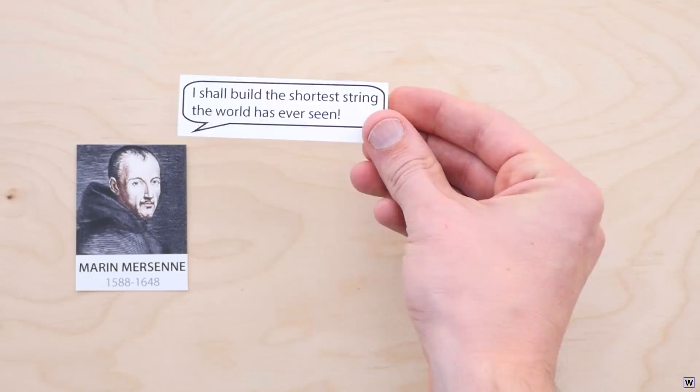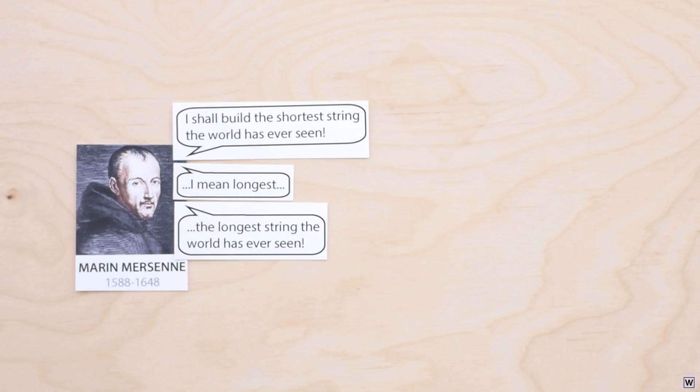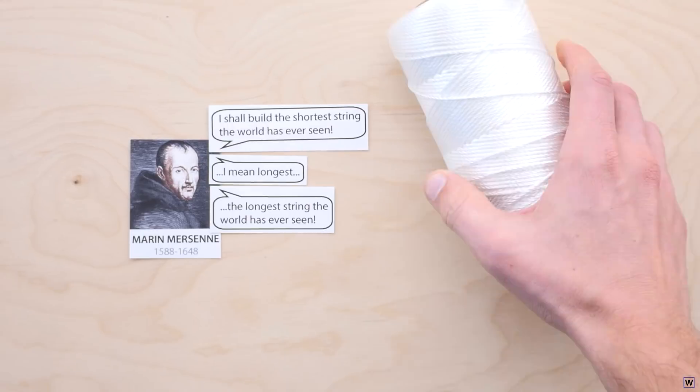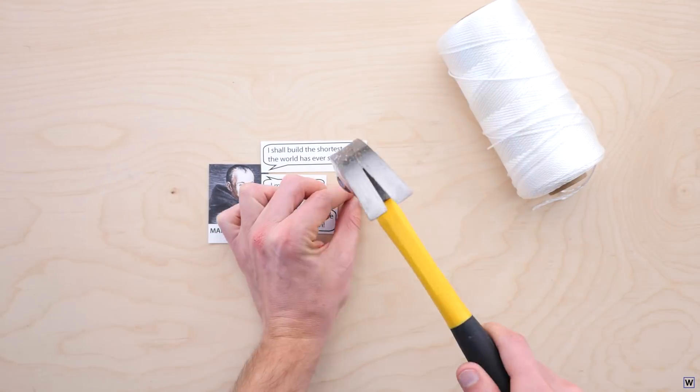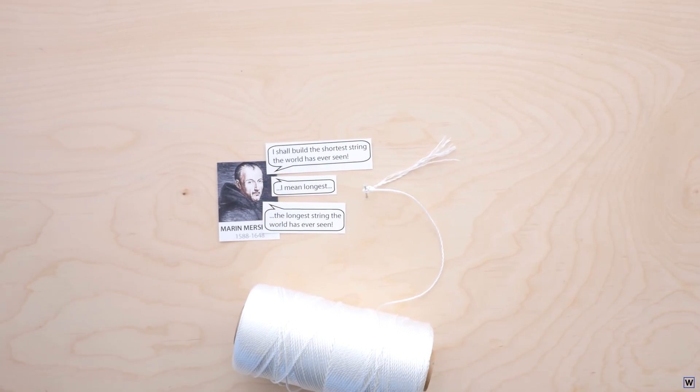He built a scale model. Thanks to Galileo's educated guesses, Mersenne believed that the longer he made his vibrating strings, the lower their frequency of vibration would be. So Mersenne set out creating longer and longer vibrating strings until the vibration became so slow he was simply able to count.